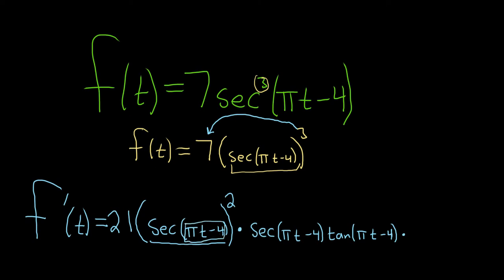So the derivative of t is 1. The derivative of negative 4 is 0. So we're just left with pi here. So times pi. So it's multiple chain rules in this problem.